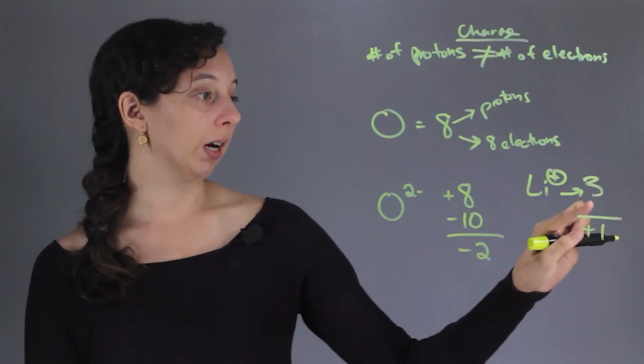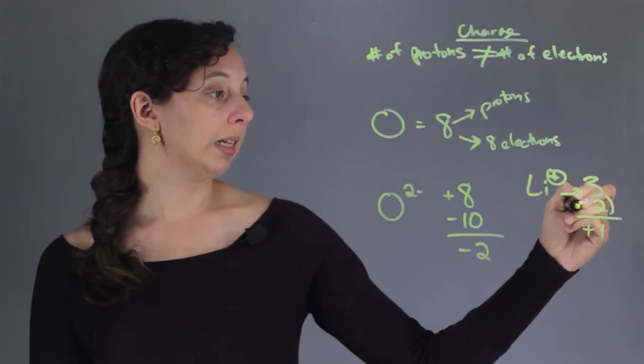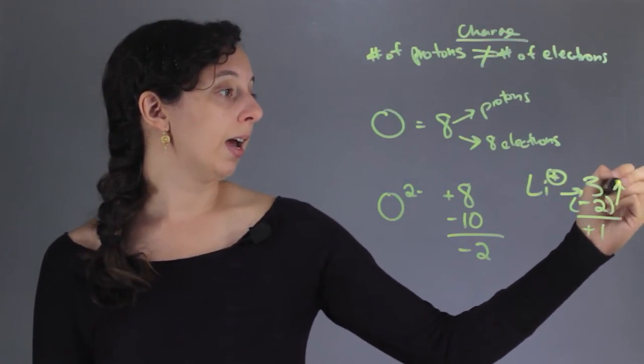So what number fits here? Well, it's negative two, which means that a positively charged lithium has two electrons.